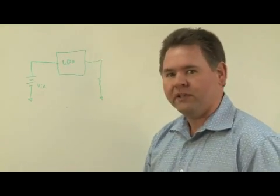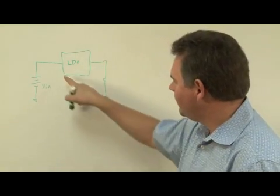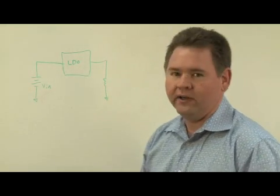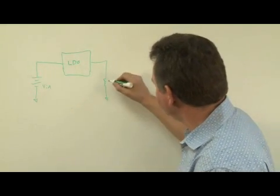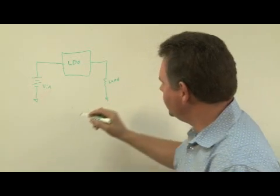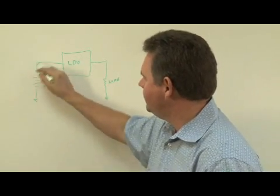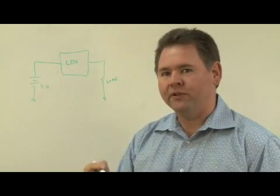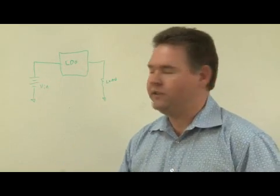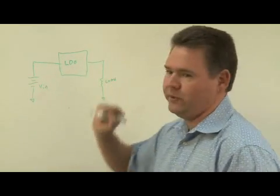To measure this in the lab, basically we have to recreate this event. We're going to bias our LDO up to our operating conditions. We're going to have some load out here, a resistive load, and we're going to bias this to some DC. Now what we have to do is somehow inject an AC signal into here to see how much we get on the output.